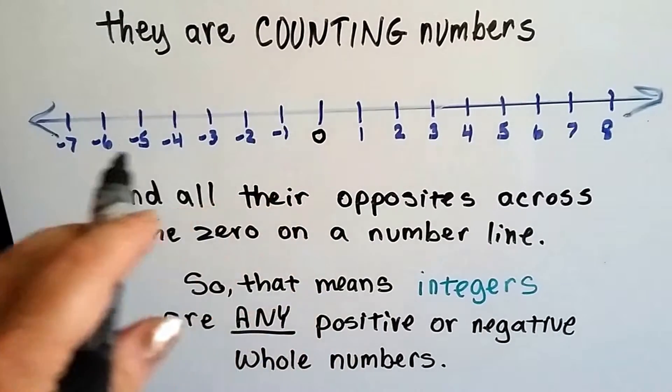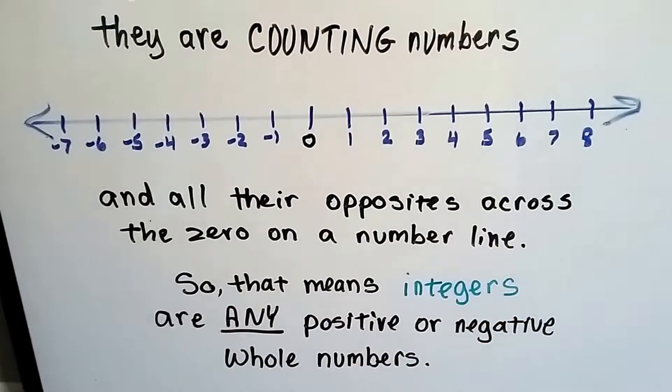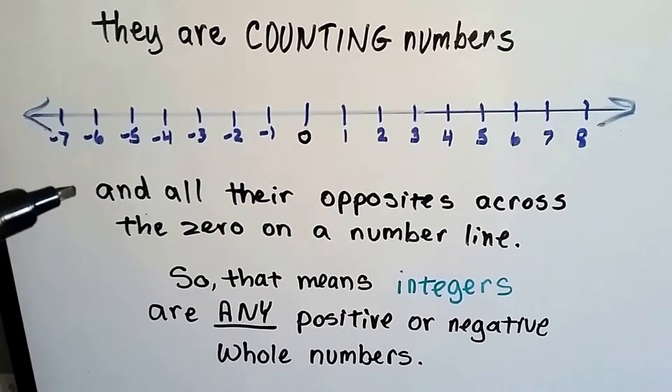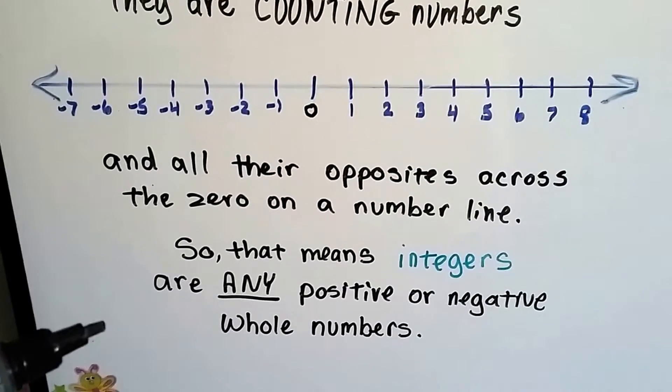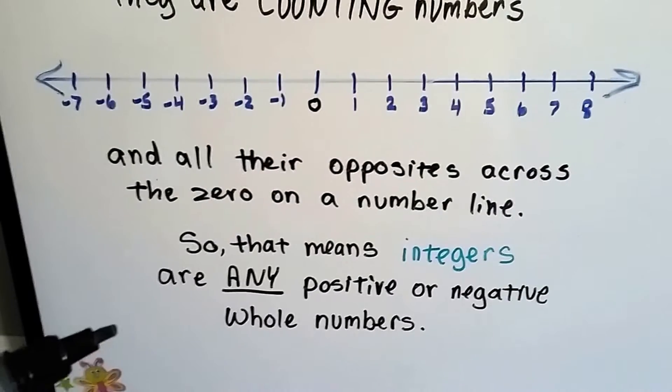You can see these are the negative numbers and these are the positive numbers. These are all integers. So that means integers are any positive or negative whole numbers.